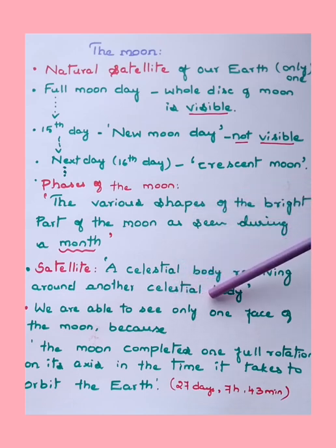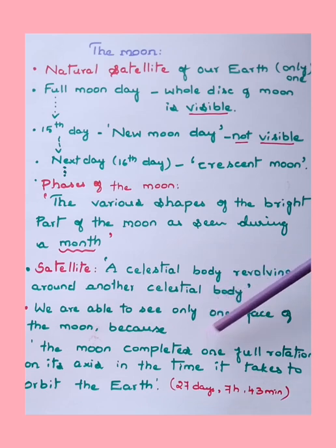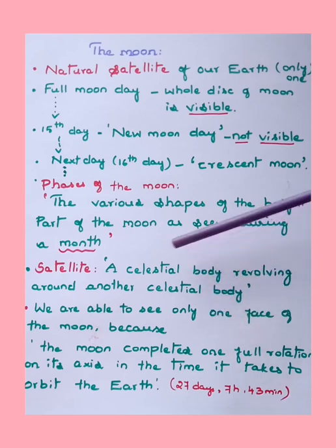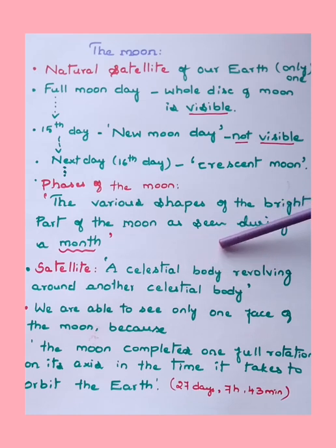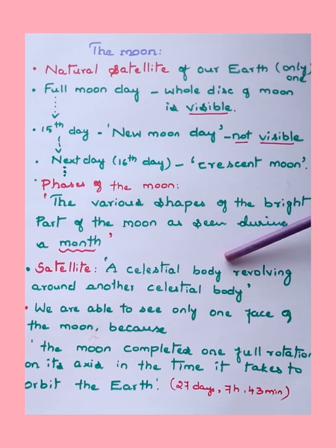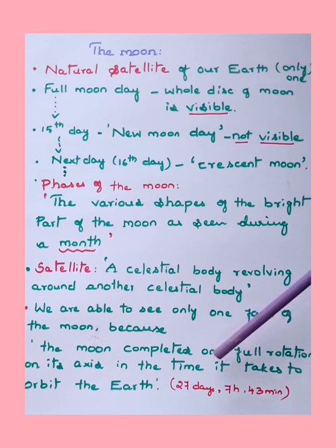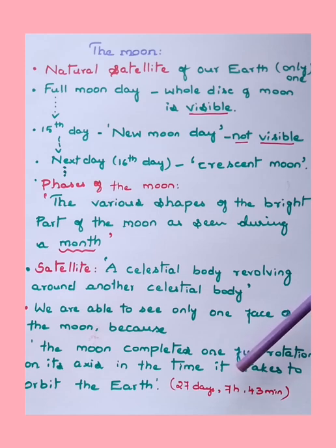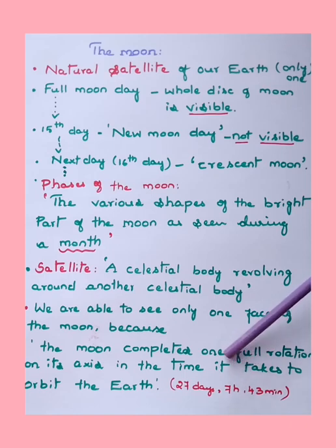We are able to see only one phase of the moon because the moon completes one full rotation on its axis in the same time it takes to orbit the earth. The time taken by the moon to complete one full rotation about its own axis is equal to the time it takes to orbit the earth — approximately 27 days, 7 hours, and 43 minutes.